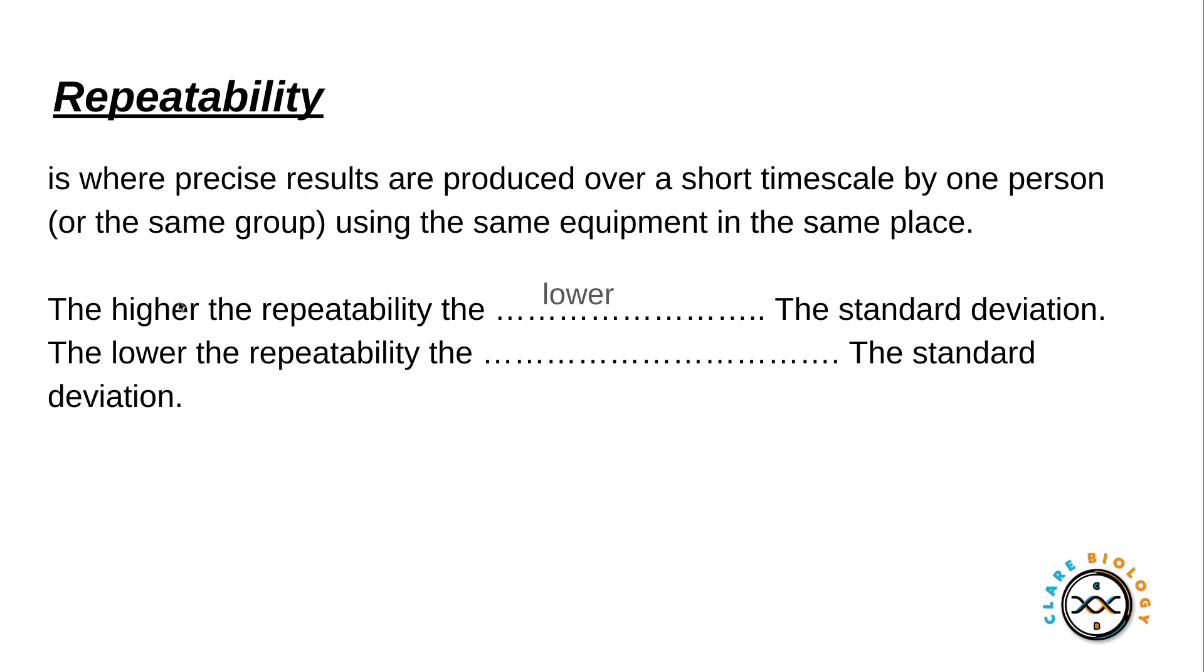Now the higher the repeatability, the lower the standard deviation. So the higher the repeatability means you're getting the same result or similar results every time, which means I'm going to get less spread of the data around the mean, which means a lower standard deviation. If I have a lower repeatability, this means that I'm getting a wider spread of data around the mean, which means I'm getting a higher standard deviation.